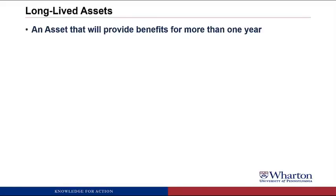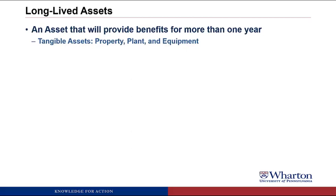I'm going to define a long-lived asset as any asset that's going to provide benefits for more than one year. There are two types of long-lived assets that we're going to talk about. First, there are tangible assets. These are physical assets, things like property, plant, and equipment. If you decide to sell one of these on eBay, either somebody would have to come over with a big truck to pick them up, or you'd have to use a lot of shipping costs to send them.